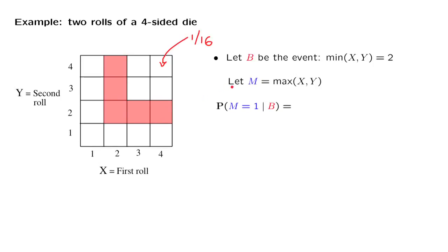Now let us look at this quantity: the maximum of the two die rolls, that is the largest of the results. And let us try to calculate the conditional probability that the maximum is equal to 1, given that the minimum is equal to 2. So this is the conditional probability of this particular outcome.